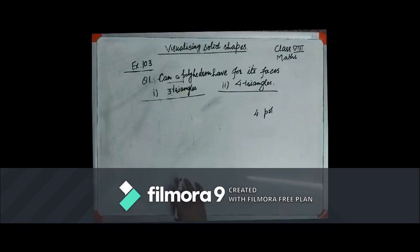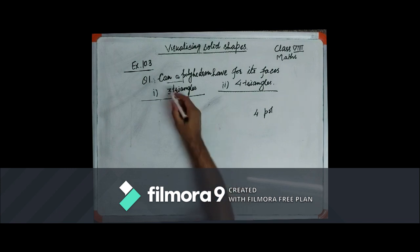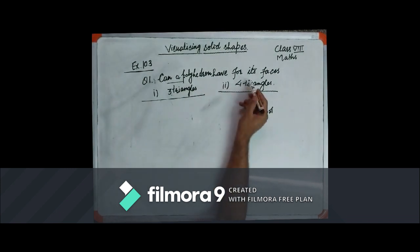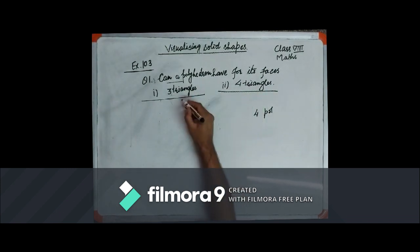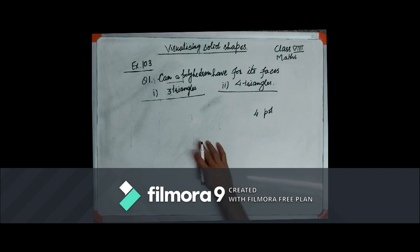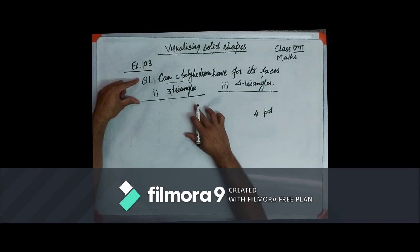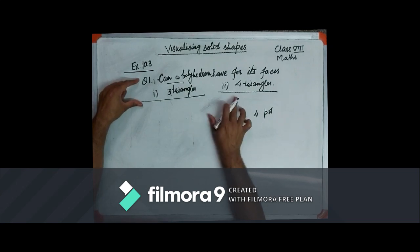Today we have exercise 10.3, visualizing solid shapes. Question number one: can a polyhedron have for its faces three triangles? And there is a third part in this question, but let us go into part number one and part number two.